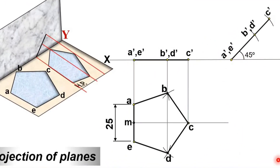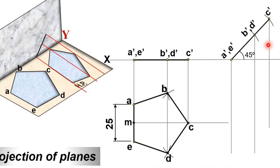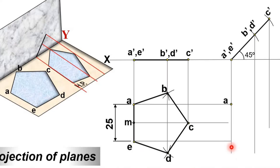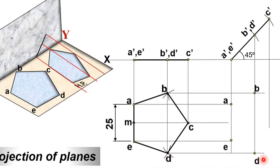Now draw the vertical projection and horizontal projection from each corner point. The horizontal projection from A and the vertical projection from A give the intersection point A. Similarly you get E, B, D, and C for the remaining points. Join all the points — this is the top view in the second stage.